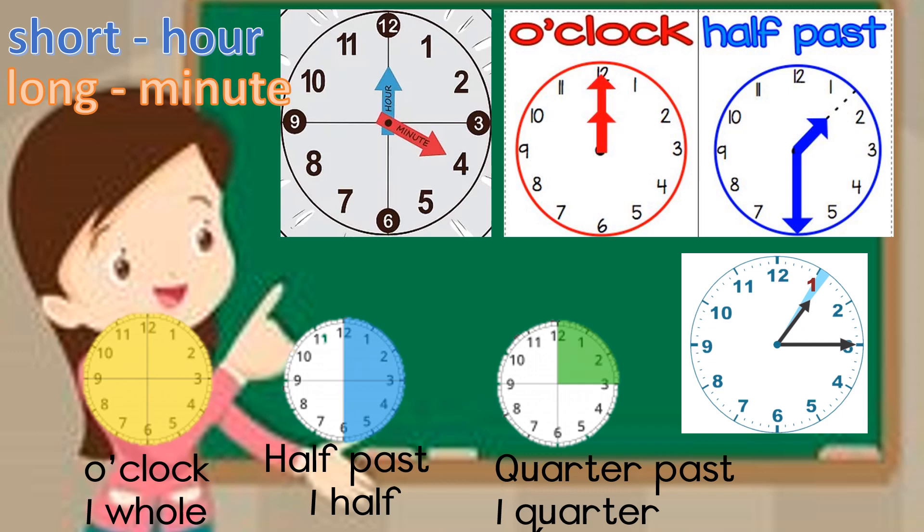In mathematics, a lot of things work together. Like for instance, fractions and time work together. If you look at the first clock, that is one whole circle. And when something is on the 12, it is on the hour that is o'clock. Because it went all the way around, covering one whole.